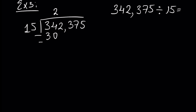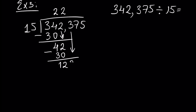We write here 2. How many 15s we have inside 42? The answer is 2. And 2 times 15 is 30, so we write minus 30. 42 minus 30 is 12. We write here number 3. How many 15s we have inside 123? Do not forget to put the decimal point here — minus 120. 123 minus 120 is 3. So we write here number 7.